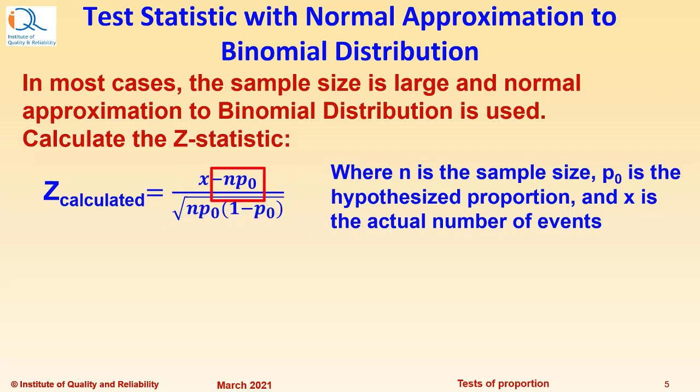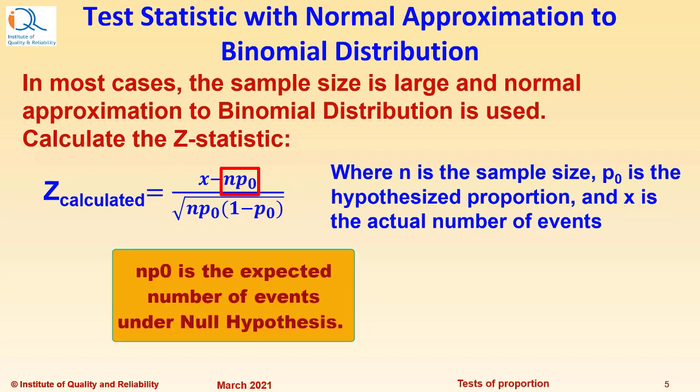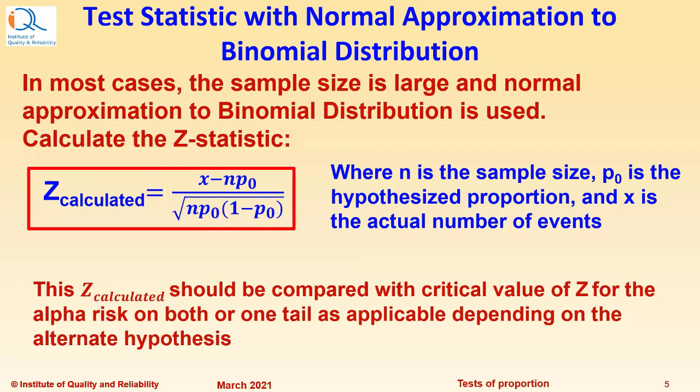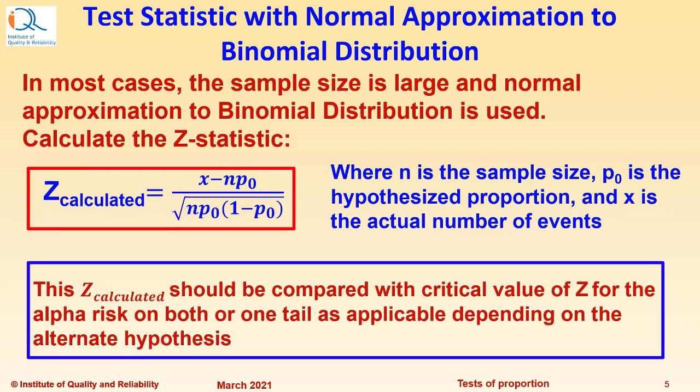Note that in the numerator there is a term that appears np0. If n is the sample size and p0 is the hypothesized proportion, then np0 is the expected number of events, either successes or failures, whatever we are testing for. This Z calculated should be compared with critical value of Z statistic for the alpha risk on both or one tail as applicable depending on the Alternate Hypothesis.